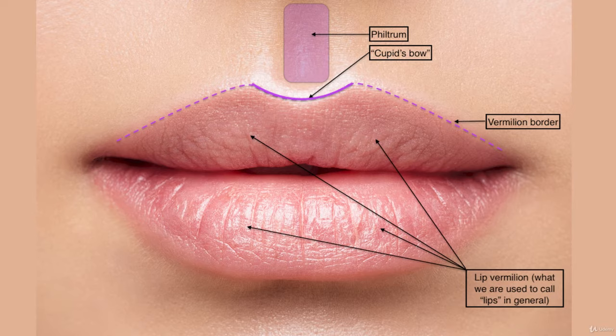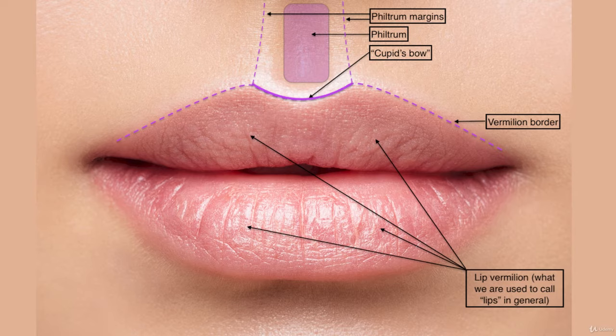Sometimes when you are injecting the vermilion border to make the lip more accented, sharper, to give it more character, you might want to inject the margins of the philtrum as well. You will see me doing that in the videos. This makes the area a little more hollow and gives a nice shadow. It's a natural feature of the lip — if it's sharper, it looks better. But don't over-treat it.